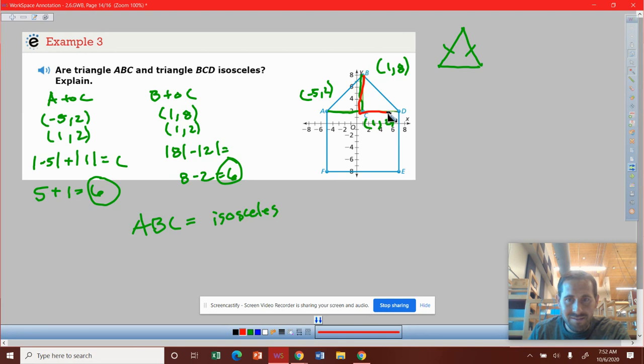We're looking at B, C, D. So we already know this B, C length. We did that here. So B, C is right here. So we could do it again, but it's 1,8 comparing it to 1,2.